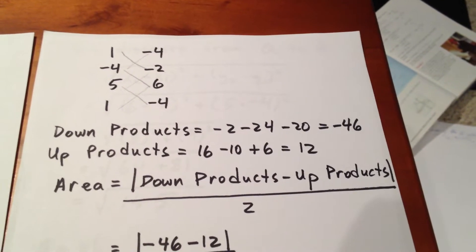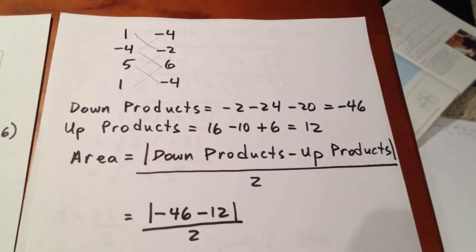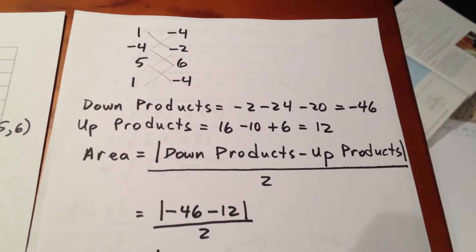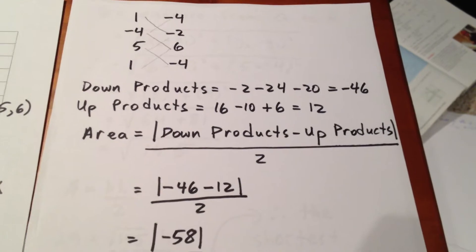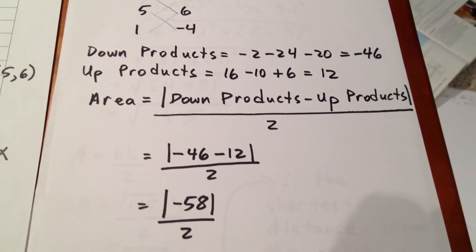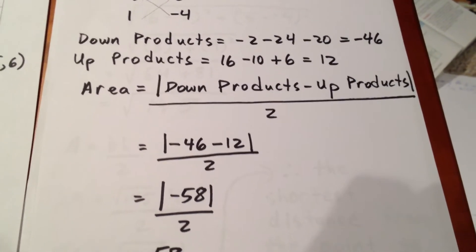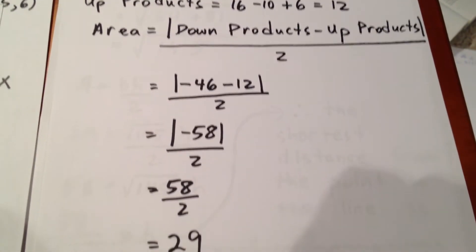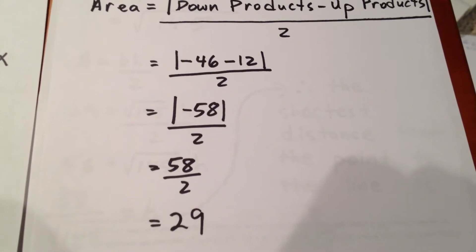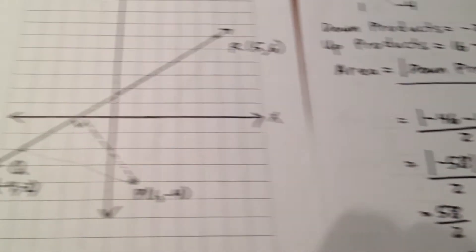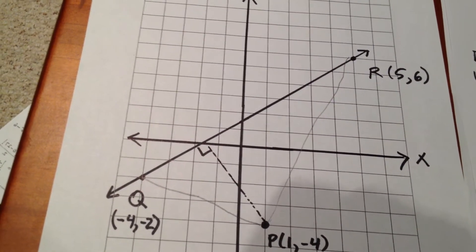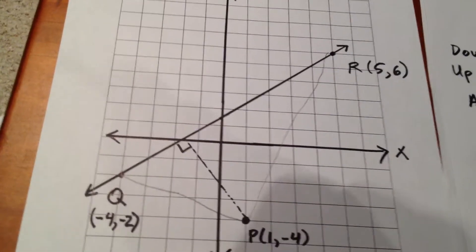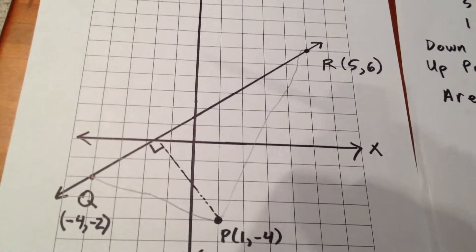So our area is the absolute value of down products minus up products, which means it's the absolute value of negative 46 minus 12, divided by 2, I should have said. The negative 46 minus 12 is negative 58. The absolute value of negative 58 is 58. And remember, that number is divided by 2, which means the area of the triangle in question is 29. So coming back to our original diagram, the area of that triangle, PQR, is 29. If we can simply find the length of that base, we'll be almost done.